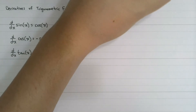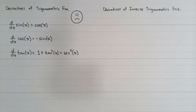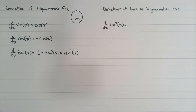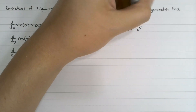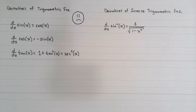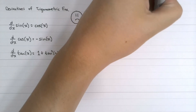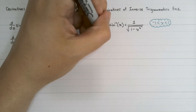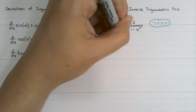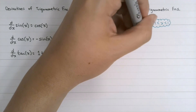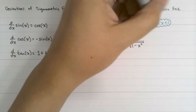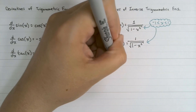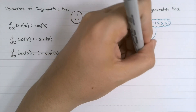Finally, let's look at inverse trigonometric functions. Instead of the derivative of sine of x, we might want the derivative of inverse sine of x, or arc sine of x. This derivative equals 1 over the square root of 1 minus x squared, for x between negative 1 and 1. The derivative of inverse cosine, or arc cosine of x, is negative 1 over the square root of 1 minus x squared, also for x between negative 1 and 1. The derivative of inverse tangent, or arc tangent of x, is 1 over 1 plus x squared.